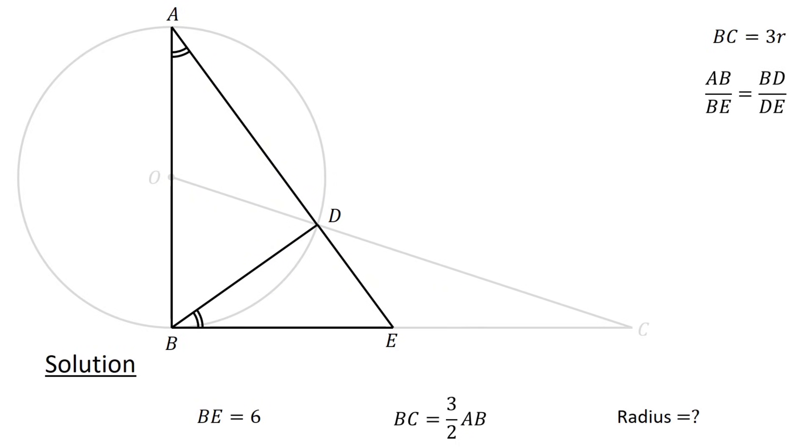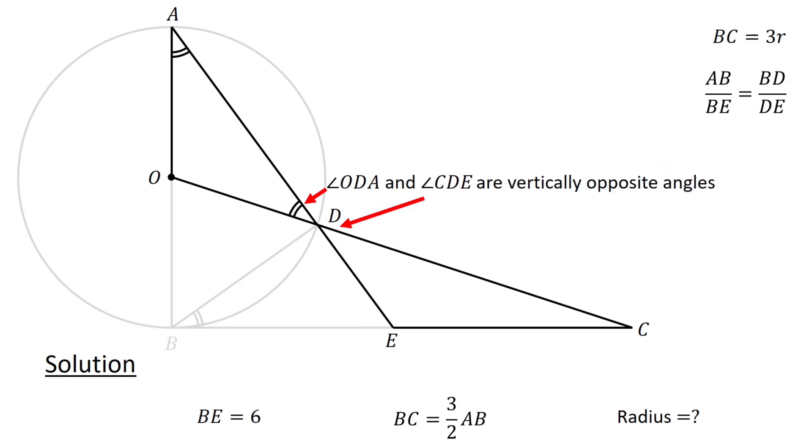Next, consider triangle AOD. Since OA and OD are the radius of the circle, we have OA equals OD. Therefore, triangle AOD is an isosceles triangle, and we have angle ODA equals angle DAO. Next, angle ODA and angle CDE are vertically opposite angles. Since vertically opposite angles are equal, we have angle ODA equals angle CDE.